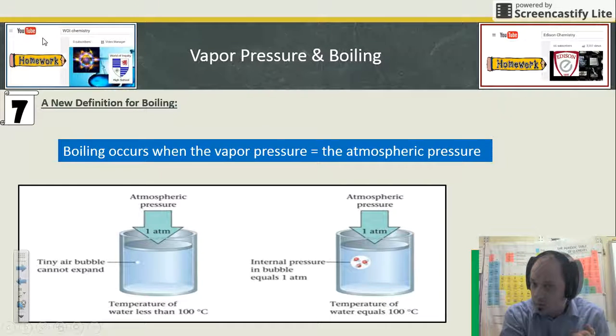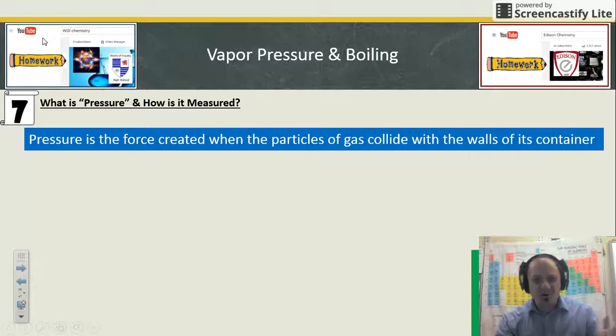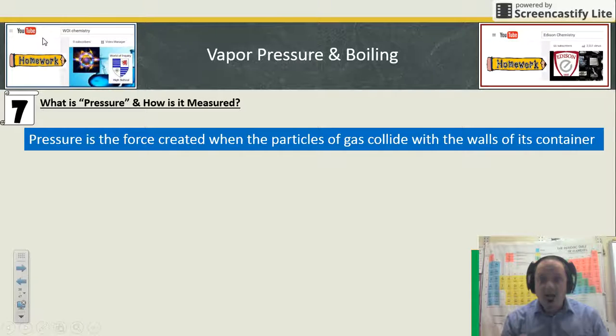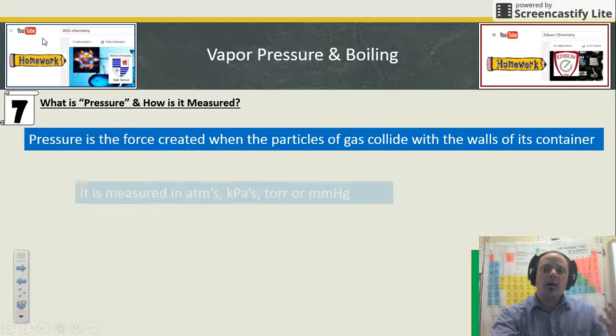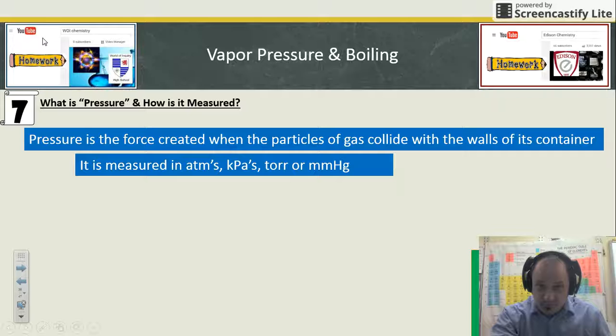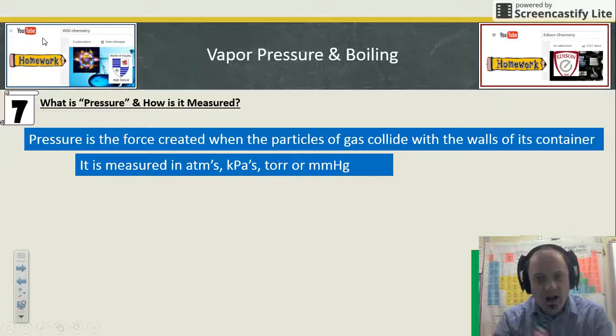Pressure—what is it? How is it measured? Pressure is a force created when gas particles collide against the walls of a container. Pressure is only created by gases. It's measured in many different units. The ones we use here are kilopascals (kPa) or atmospheres. Torrs and millimeters of mercury are other units of pressure you might find, as well as bars. But we only focus on atmospheres and kilopascals.